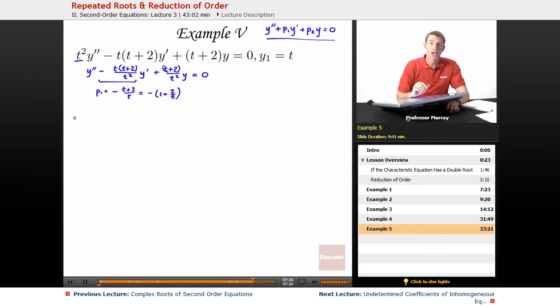I'm going to use the formula for reduction of order. Let me remind you: it's y1 times w prime plus the quantity 2 y1 prime plus p1 y1 times w equals 0. We don't know what w is, but we know everything else. We can fill it in and solve a first-order differential equation for w.